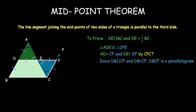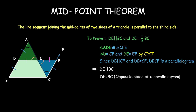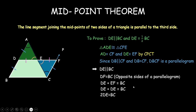Since DBCF is a parallelogram, DF is parallel to BC — these are opposite sides — so a part of DF, namely DE, is also parallel to BC. We got the first result we wanted to prove. Now for the measurement: DF is equal to BC because they are opposite sides of a parallelogram, and DF equals DE plus EF. But EF is already equal to DE, so DE plus DE equals BC, meaning twice DE equals BC, and thus DE is half of BC. We got both results.